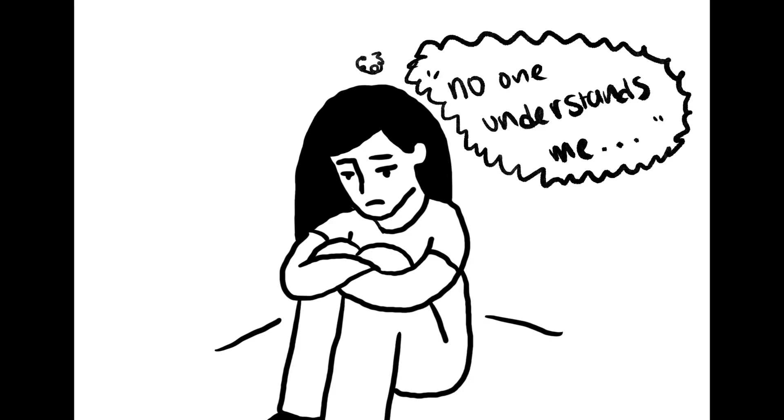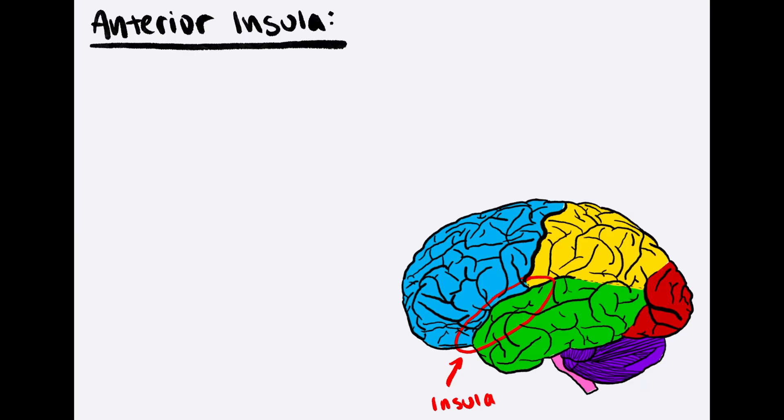Next up is one of the least understood brain regions, the insula. In the social brain, we are specifically interested in the anterior insula.